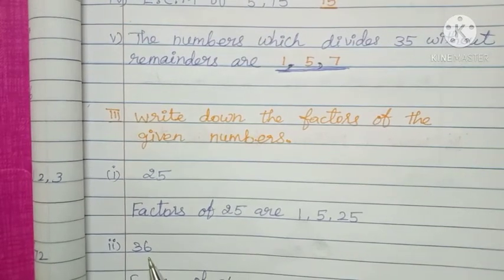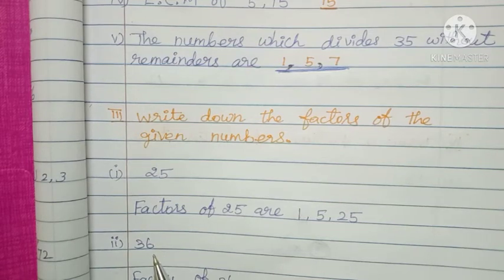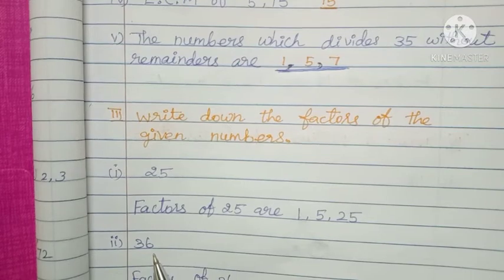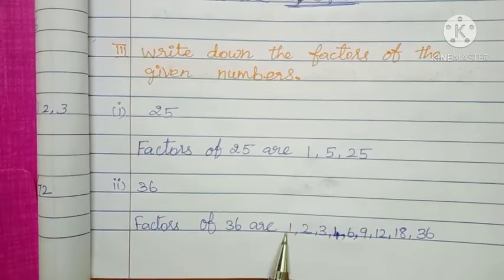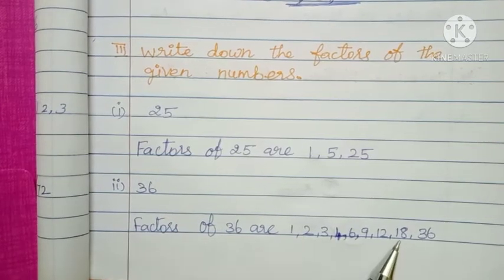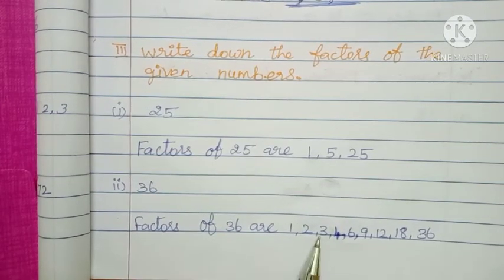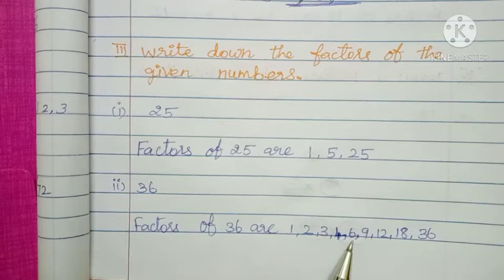The next number is 36. 36 is coming for 1 table, 2 table, 3 table, 4 table also coming. Write the factors: 1, 36's are 36; 2, 18's are 36; 3, 12's are 36; 4, 9's are 36; 6, 6's are 36. Easy to find out.